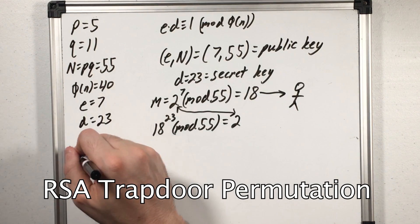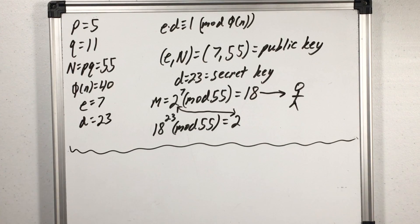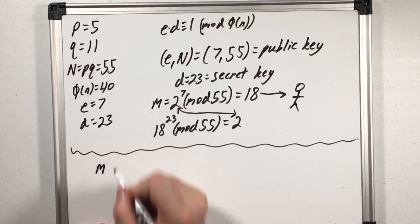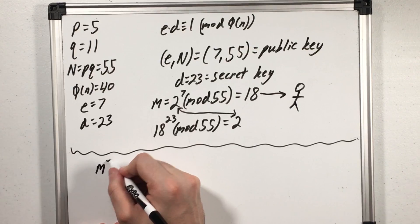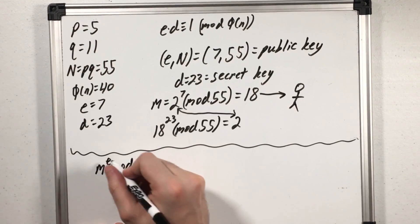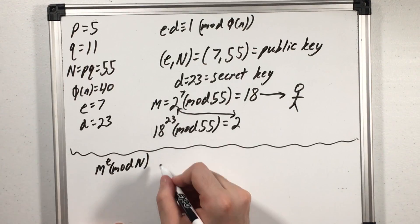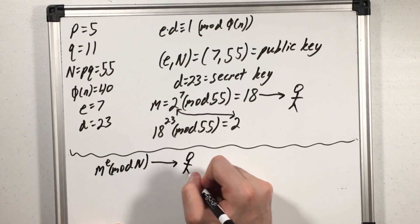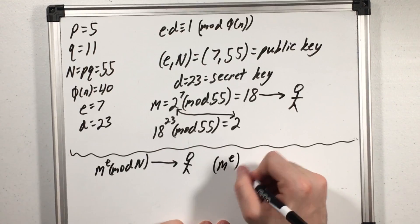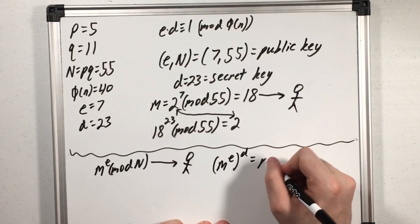I'll show you guys real quick why it works using just variables. So some random person who wanted to send me a message took their message m and raised it to the power of e mod n. And again both of these public information. Then they sent that off to me. I took that number and raised it to the d power which gets me m to the ed.